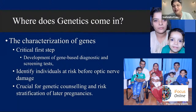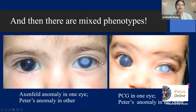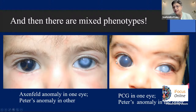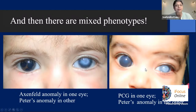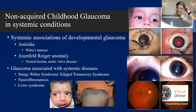There are also mixed phenotypes where nobody has definitive answers — Axenfeld in one eye and Peters in the other, or PCG in one eye and Peters in the other. It's all mix and match; you can have one syndrome in one eye and another in the other. Understanding genetics is important for this reason.